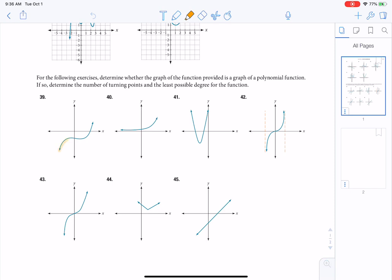It's going to be a polynomial because it's smooth and continuous. There are no sharp points in it, and I don't have to lift my pencil to draw that.